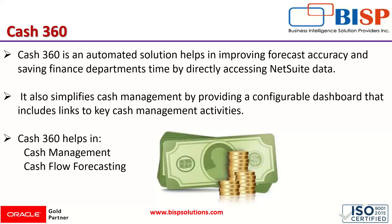The Cash 360 feature helps in cash management comprising current cash balance, accounts payable and accounts receivable balances, cash flow trends, and a rolling six-month cash flow forecasting. It also enables users to incorporate one-time cash inflows and outflows, allowing them to project their cash needs and evaluate the company's liquidity position. So it helps in both the management of cash and making the required forecasts.